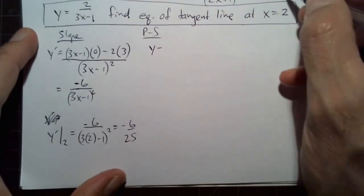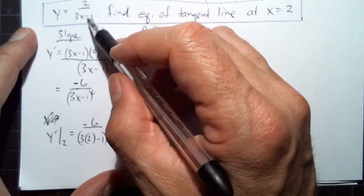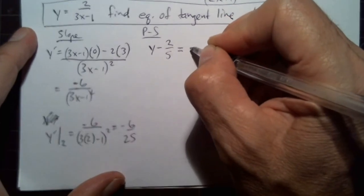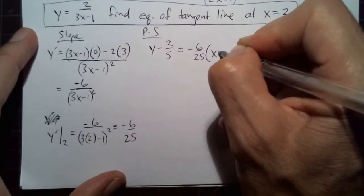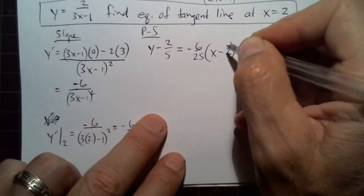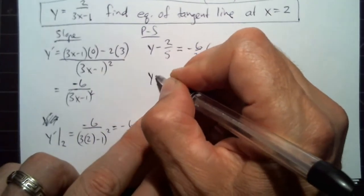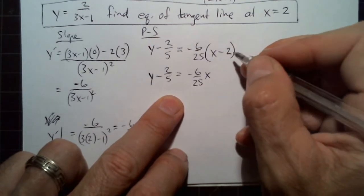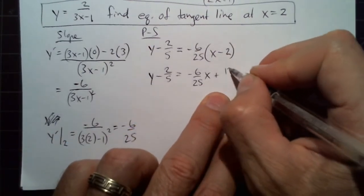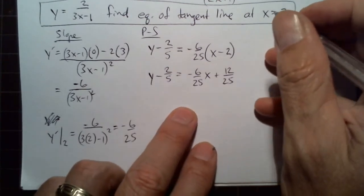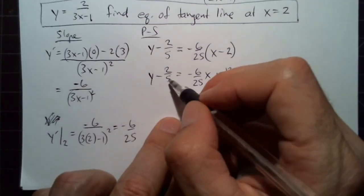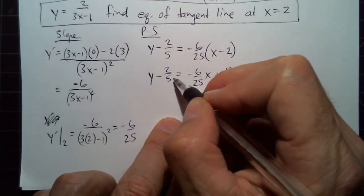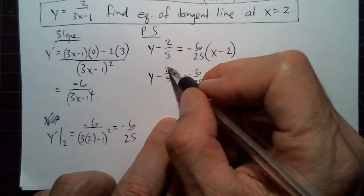The y value is what we get when we plug 2 in, and that's 2 fifths. Using point-slope form: y minus y₁ equals m times (x minus x₁), where m is the slope negative 6 over 25. Multiplying through gives positive 12 over 25, and here we'll have 10 over 25.